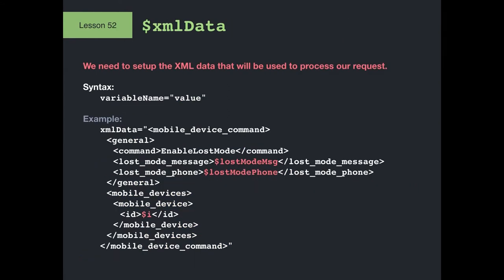For deleting computers, we didn't include any XML data. For this command, we have to provide XML data. The payload is already defined: the mobile_device_command wrapper, under general the command is EnableLostMode, then the lost mode message and phone number, then under mobile_devices we specify which device. The way I have the script set up, it will do a new curl command for each device. I could use the loop to add multiple devices to the same payload — if I had a lot I would — but for two it's not worth worrying about.